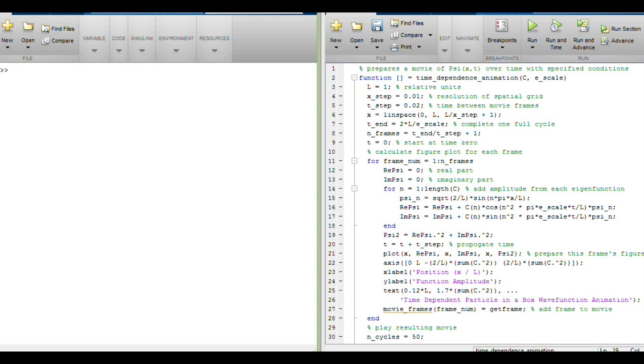Welcome back to MATLAB for a simulation of the time dependence of the wave function for the particle in a box. Just as in the rest of these MATLAB videos, I've got a function here on the right that is going to take the input of some vector c, which is a set of coefficients for the eigenfunctions of the particle in a box for that linear combination of them, and then a timescale factor to make it convenient for us to watch.